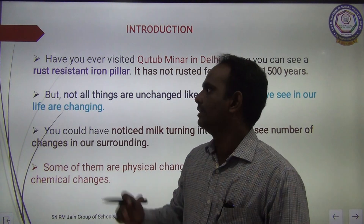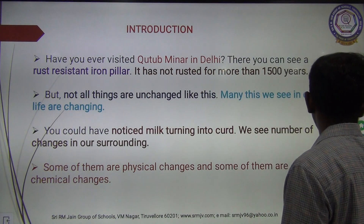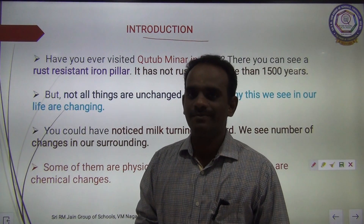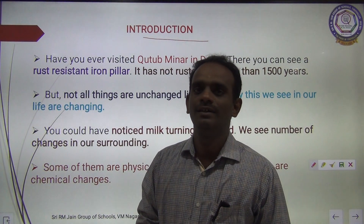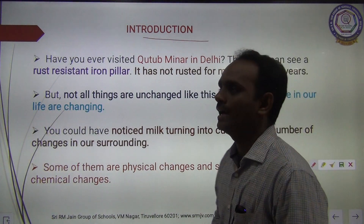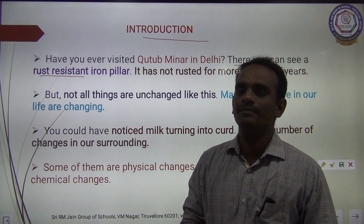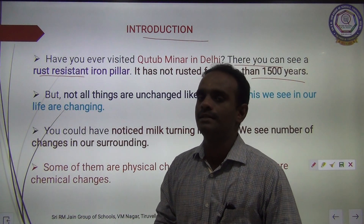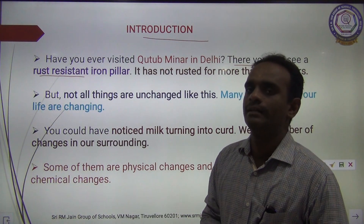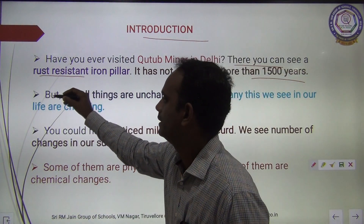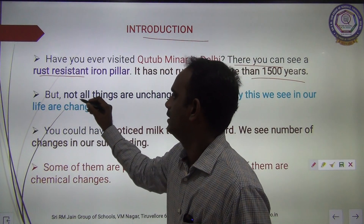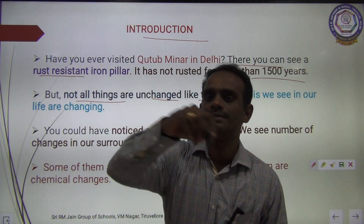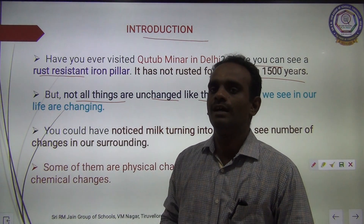Before going to start the lesson, the first one is Introduction. Have you ever visited Qutub Minar in Delhi, children? There you can see a rust-resistant iron pillar. It was constructed before 1500 years ago. That particular iron pillar will not develop any rust. But not all things are unchanged like this. Many of the things around us may have a chance of changing frequently.